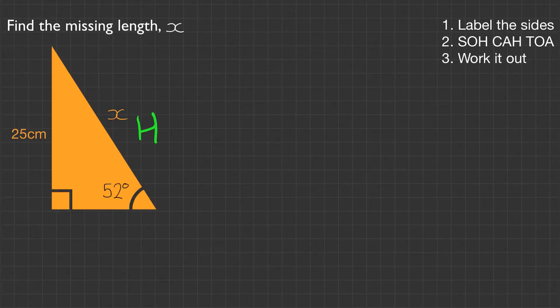We've got the hypotenuse here, as it's the longest side and it's facing the right angle. The next side is the opposite, as it's opposite the given angle. And finally, the adjacent side, as it's adjacent to the given angle but also not the longest side. We've now labeled the sides.